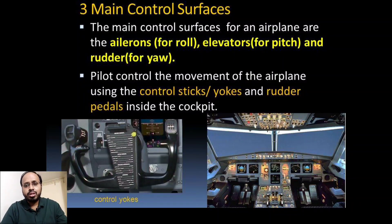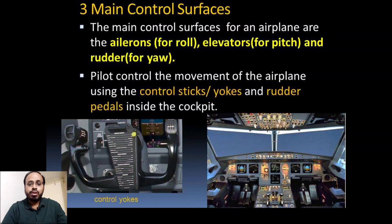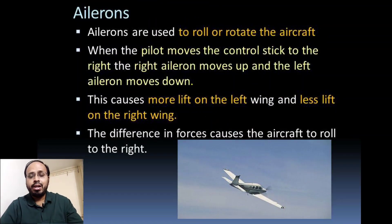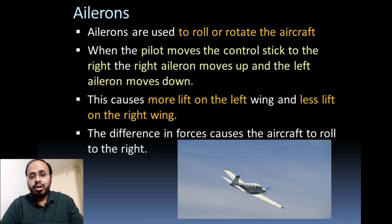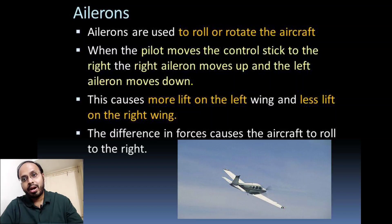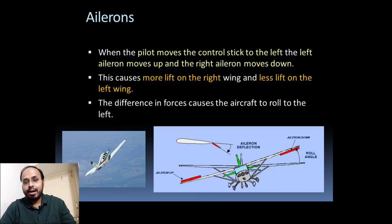Ailerons are used to roll and rotate the aircraft. When the pilot moves the control stick to the right, the right aileron moves up and left aileron moves down — this creates more lift on the left wing and less lift on the right wing, causing the aircraft to roll to the right. When the pilot moves the control stick to the left, the left aileron moves up and right aileron moves down, creating more lift on the right wing and less on the left, rolling the aircraft to the left.